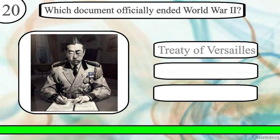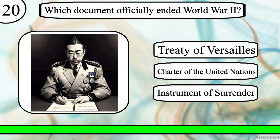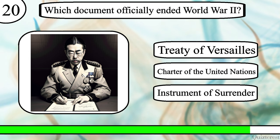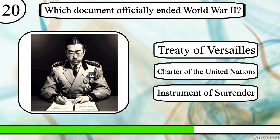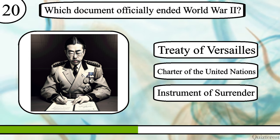Question 20. Which document officially ended World War II? Treaty of Versailles, Charter of the United Nations, or Instrument of Surrender?